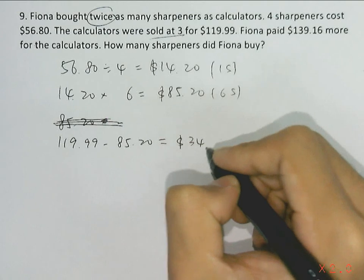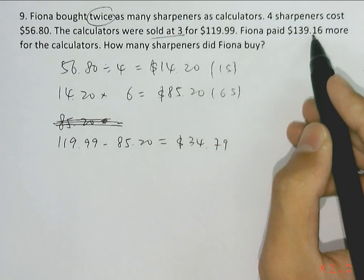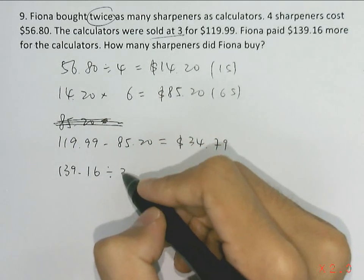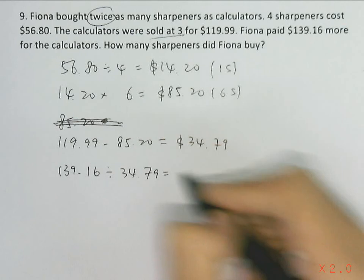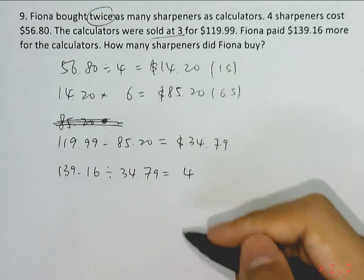So the total difference in price is $139.16, which we'll divide by the difference of each group, $34.79, to find how many groups there are. This gives us 4. So there were four groups, and each group has six sharpeners and three calculators in there.